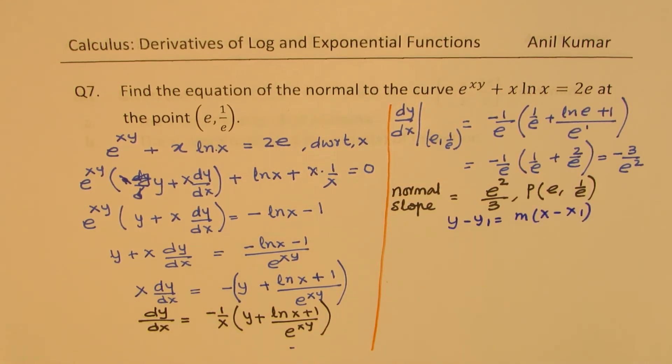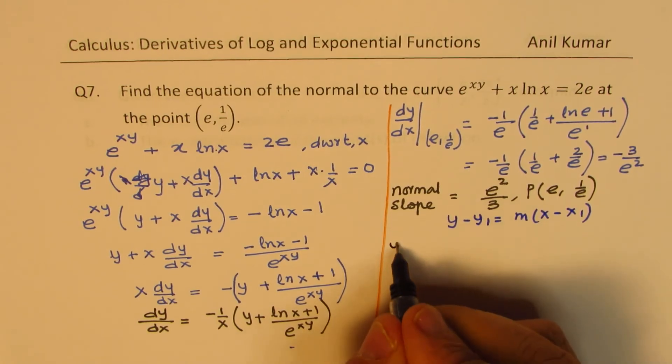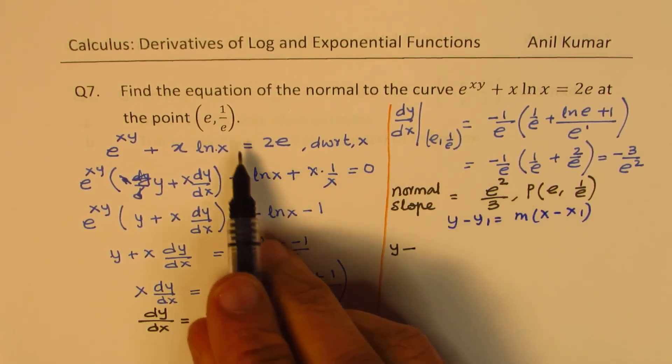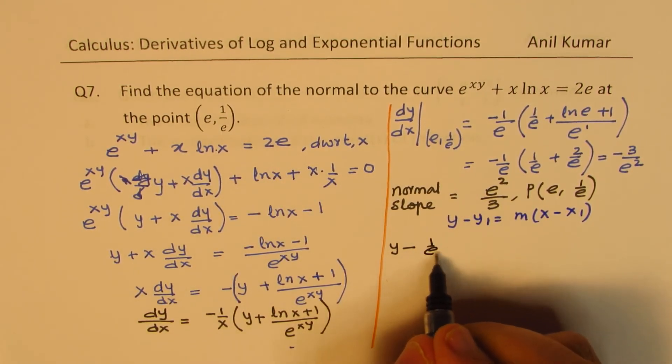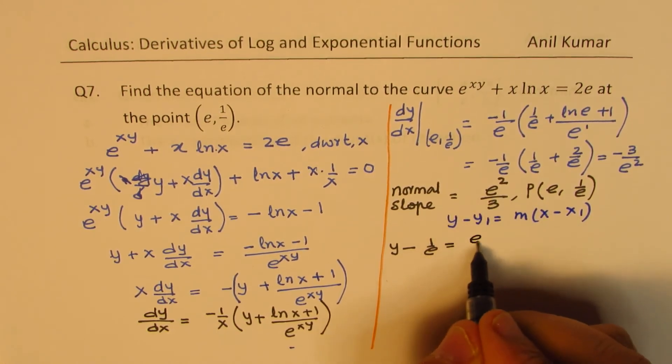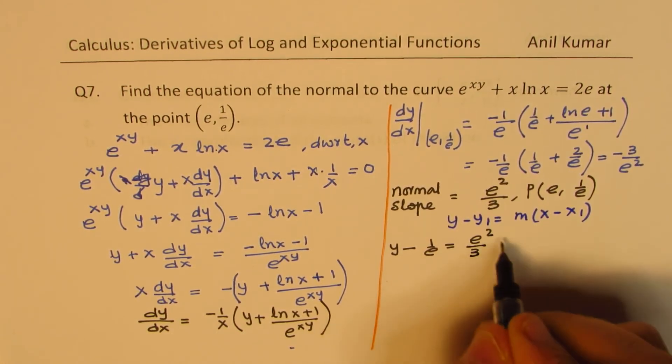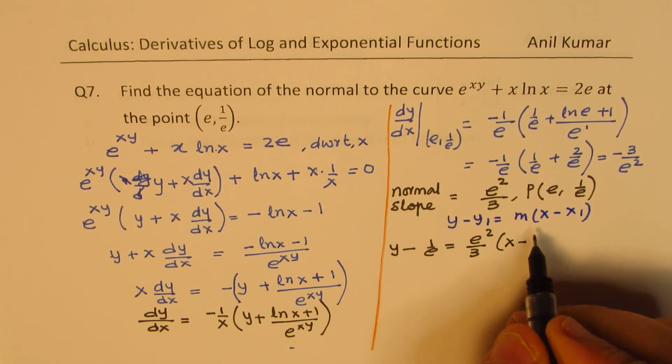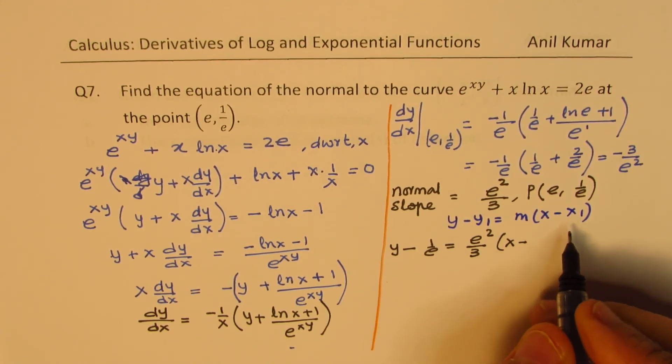So what we get here is y - 1/e equals e^2/3 times (x - e).